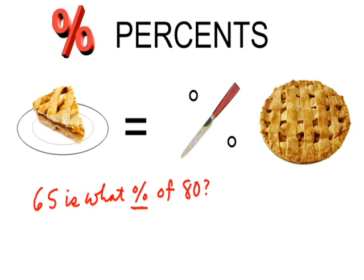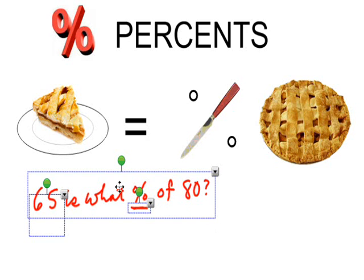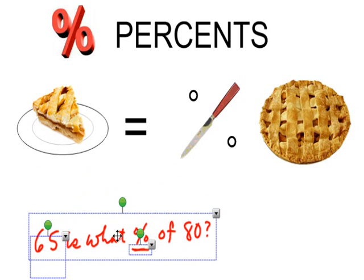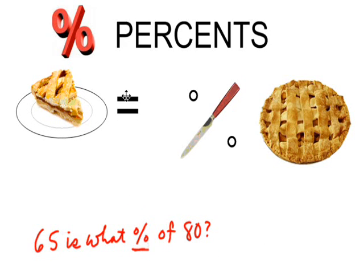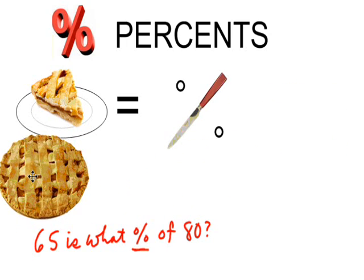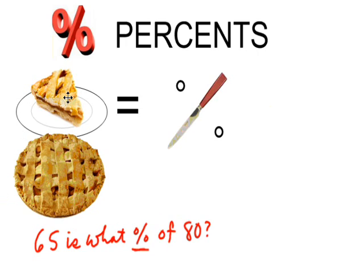And so in this particular instance, the way that we would work that would be the percent right here is going to equal the slice divided by the pie. The percent is equal to this fraction of the part over the whole, the slice divided by the pie. So let's work this then.